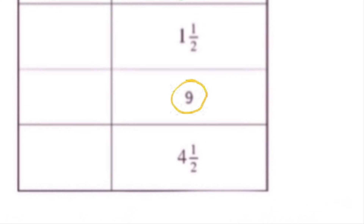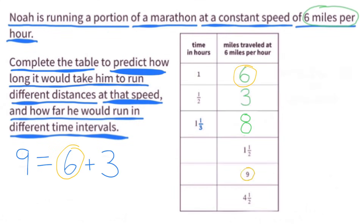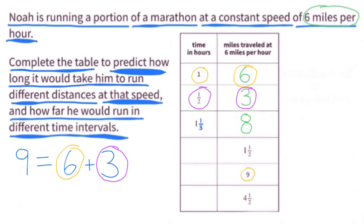Since this one looks easier, I'm going to skip down to 9 miles traveled at 6 miles per hour. 9 is equal to 6 plus 3. Since he ran 6 miles in 1 hour, and he ran 3 miles in a half hour, he would have run 9 miles in a total of 1 and 1 half hours.